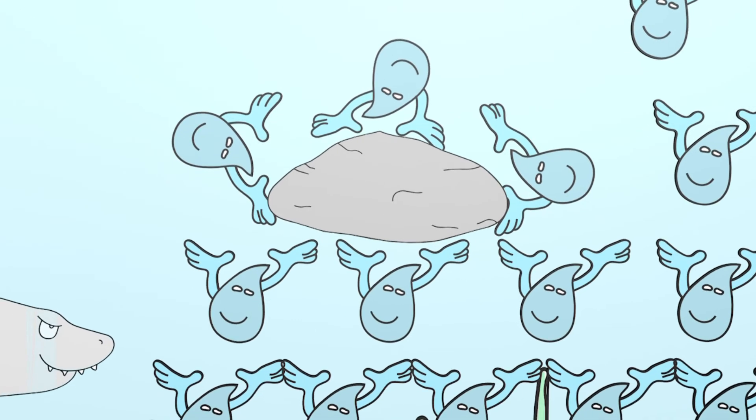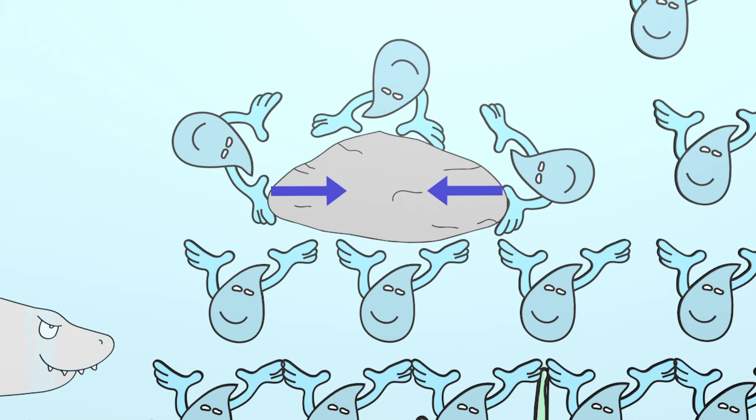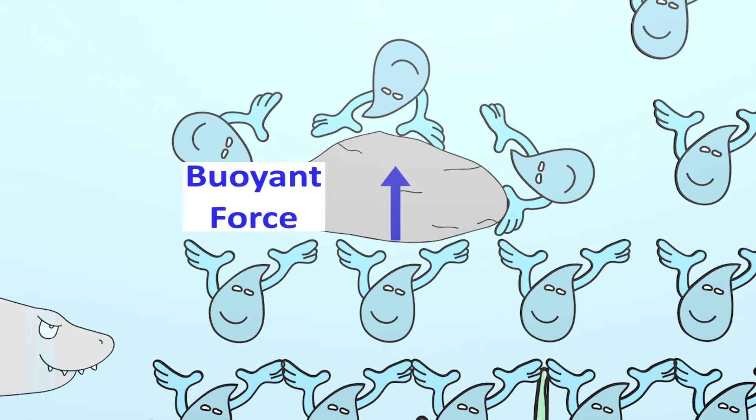The two lateral forces balance each other out. The force from the water particles which presses the stone down on its upper side is smaller than the force from the water particles which presses on its lower side. This is because the number of water particles increases with depth. The two forces lead to a resulting upward buoyant force. However, since the weight force of the stone is greater, the stone continues to sink to the ground.